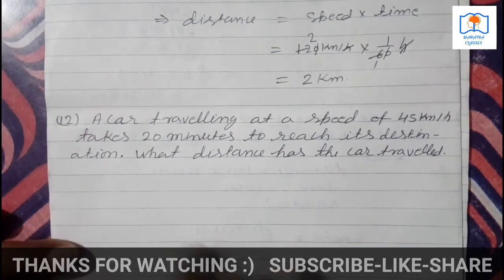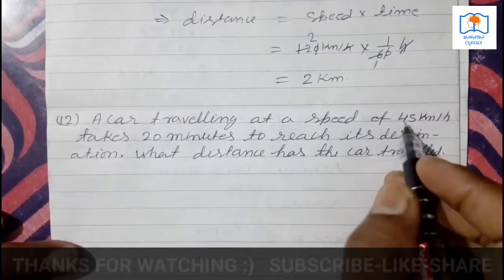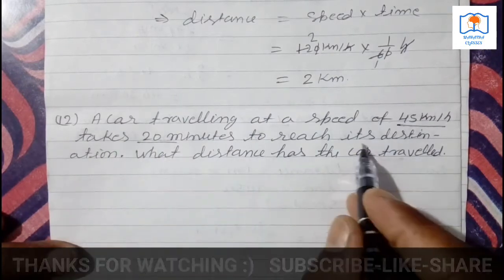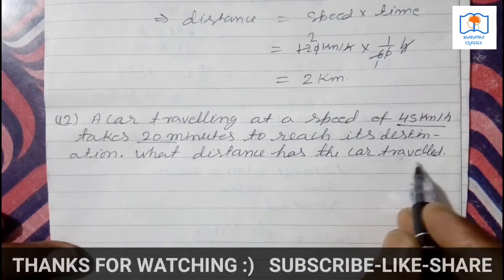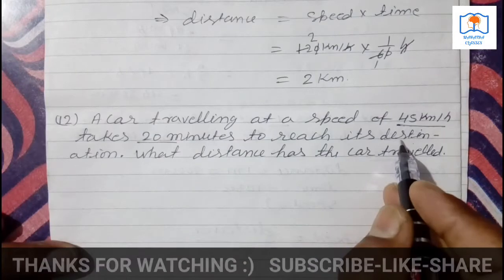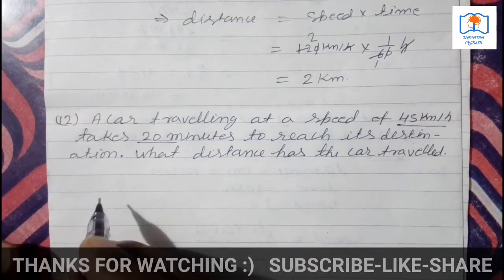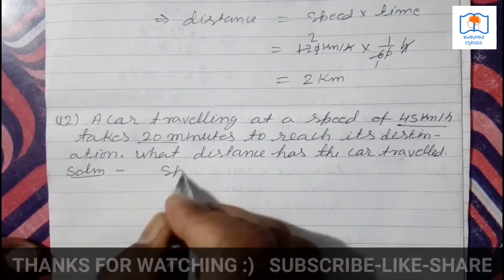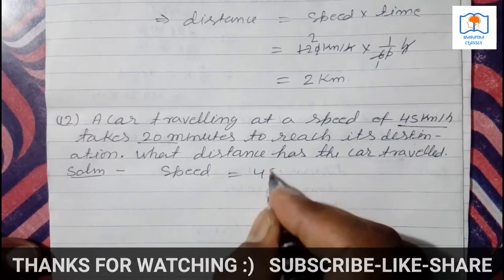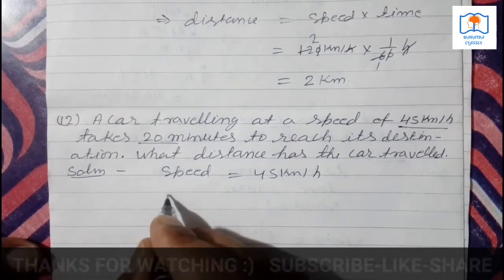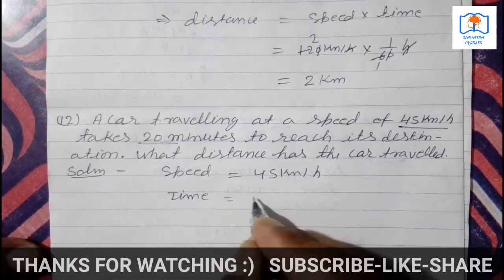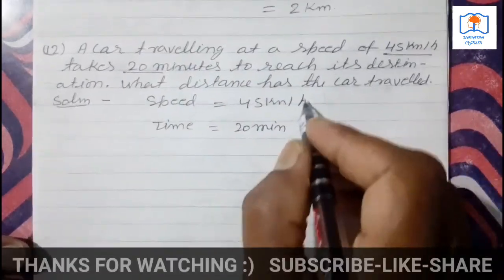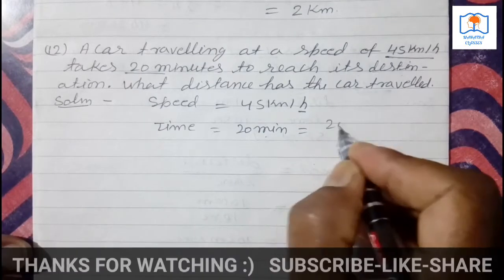A car travels at the speed of 45 km per hour. How many minutes? It takes 20 minutes to reach its destination. What distance has the car traveled? First you write the given data. Speed: 45 km per hour. Time: 20 minutes. Same similar question here.